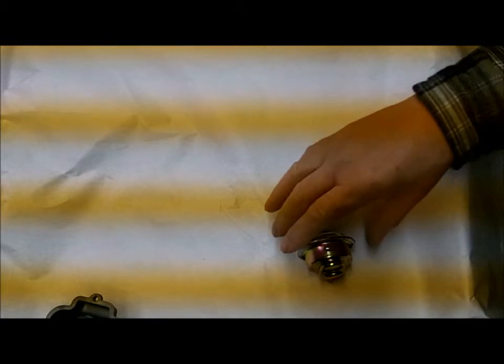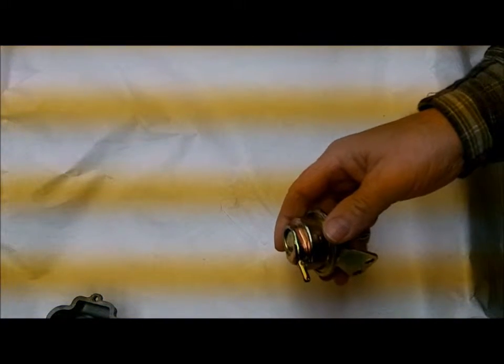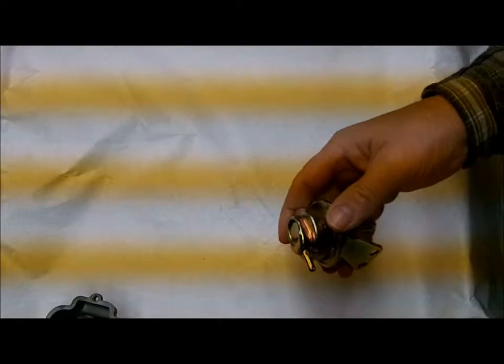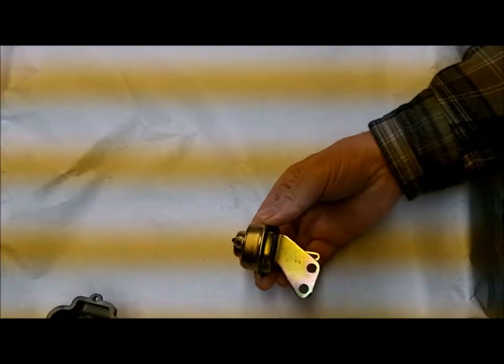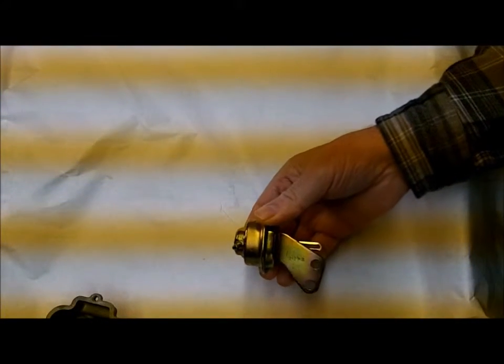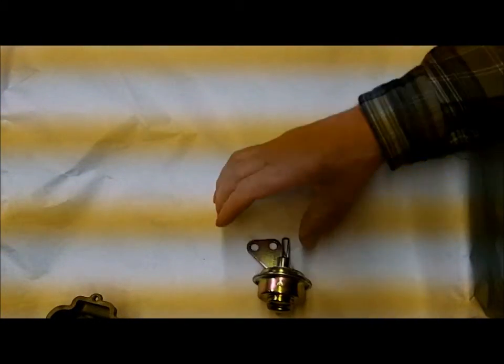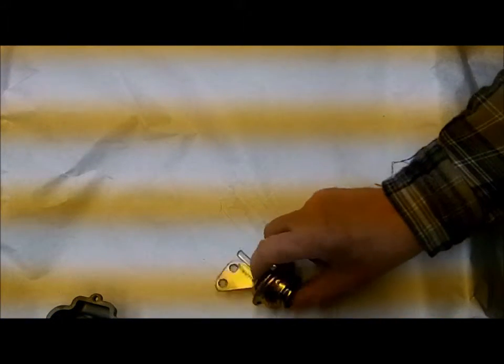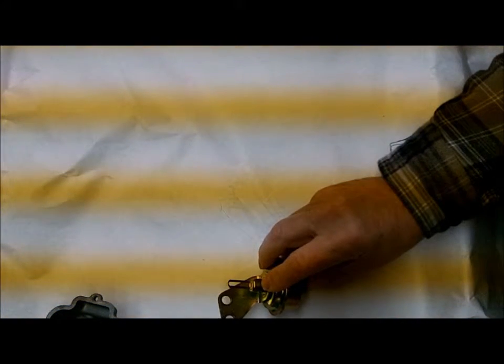Hi, Mike's Carburetor Parts here, demonstrating this choke pull-off or vacuum brake. Our part number is P7159, and this fits a 1976 Cadillac that uses the 4-barrel Quadrajet carburetor.